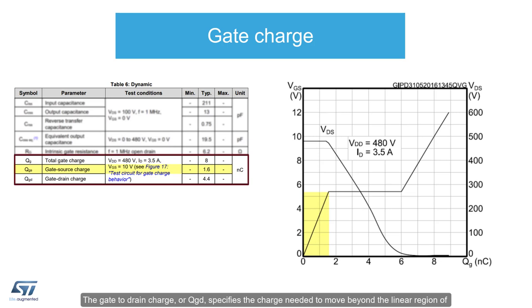The gate to drain charge, or QGD, specifies the charge needed to move beyond the linear region of operation and into the ohmic state where drain voltage is no longer blocked.